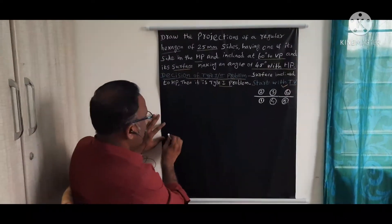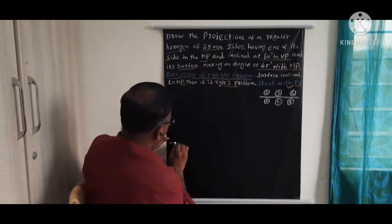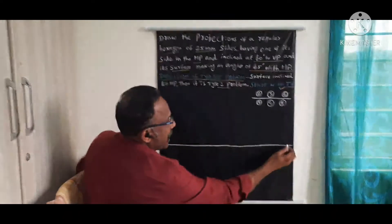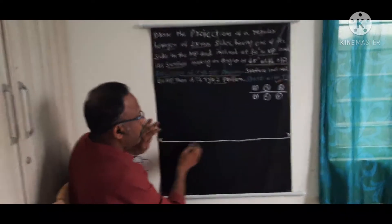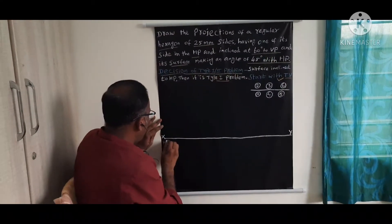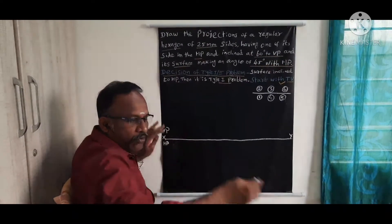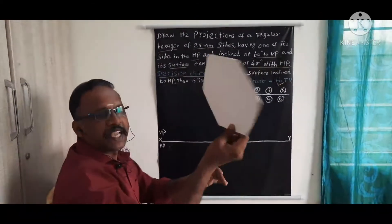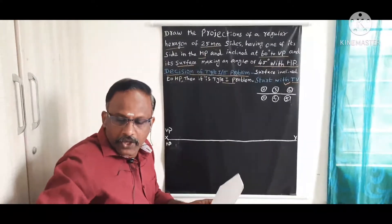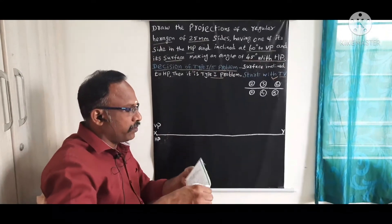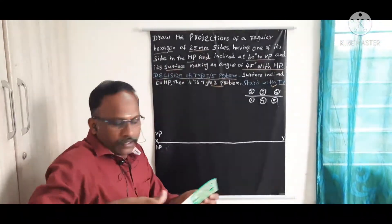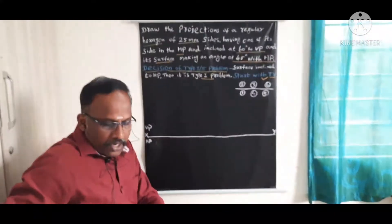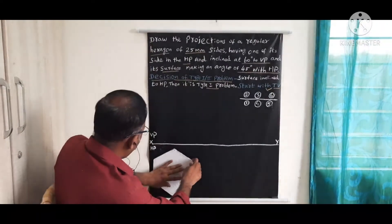First of all, you need to draw one XY reference line here. Mark X and Y on it. Below the XY line is called HP and above the XY line is called the VP plane. Now, for the first step in the initial position, we need to draw the top view of this hexagon. I already explained how to draw this hexagon using a template in yesterday's class, so you can use that template for drawing Step 1.